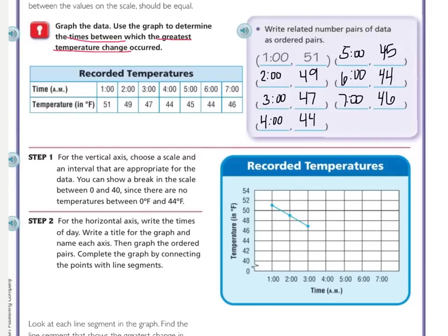That was time and temperature. This is real-world data because it was like an experiment where they recorded times and then recorded the temperature based on that time. Step one: for the vertical axis, choose a scale and an interval that are appropriate for the data. You can show a break in the scale between 0 and 40, since there are no temperatures between 0 and 44. The scale goes from 0 to 54 because our top number is 51 — you always want to go a few above your top number. The lowest number is 44, so they start at 40 and count by twos. The interval is twos.